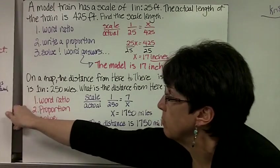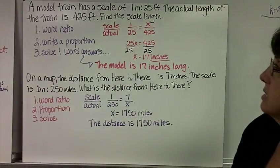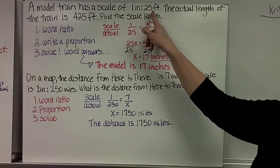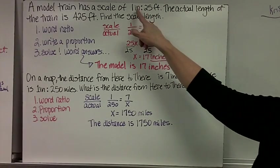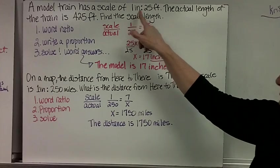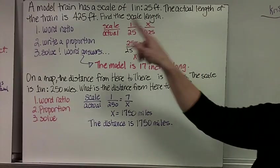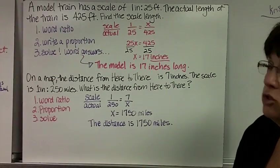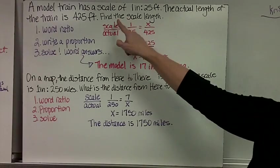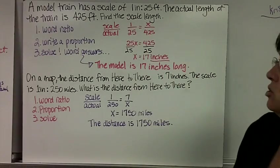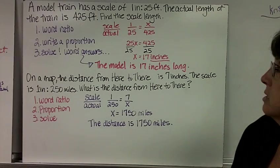Here are two examples. A model train has a scale of 1 inch to 25 feet. That means 1 inch on the paper is 25 feet in real life. The actual length of the train is 425 feet. Find the scale length—what would it be on the drawing is what we're asking.